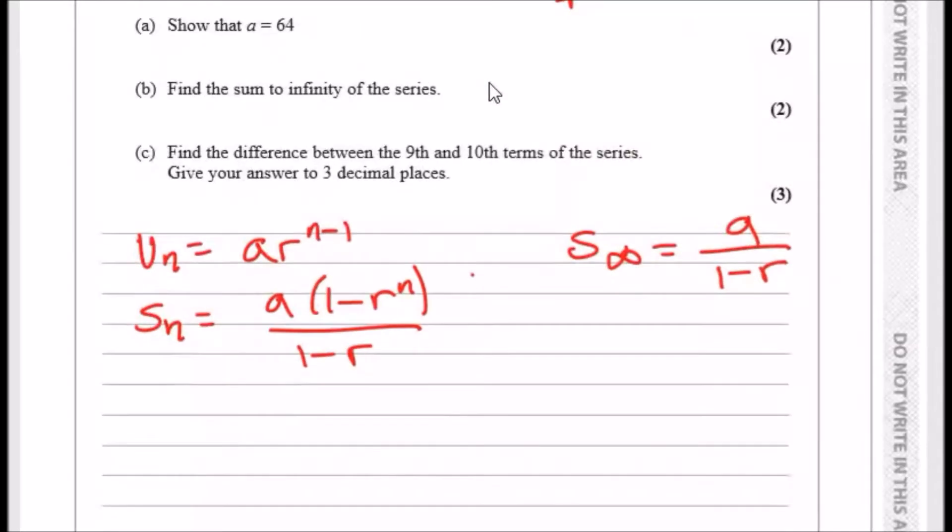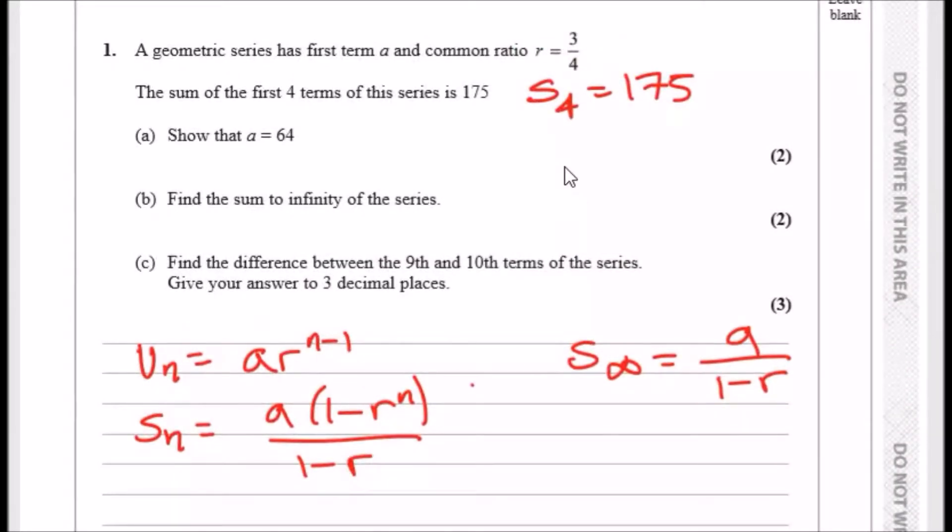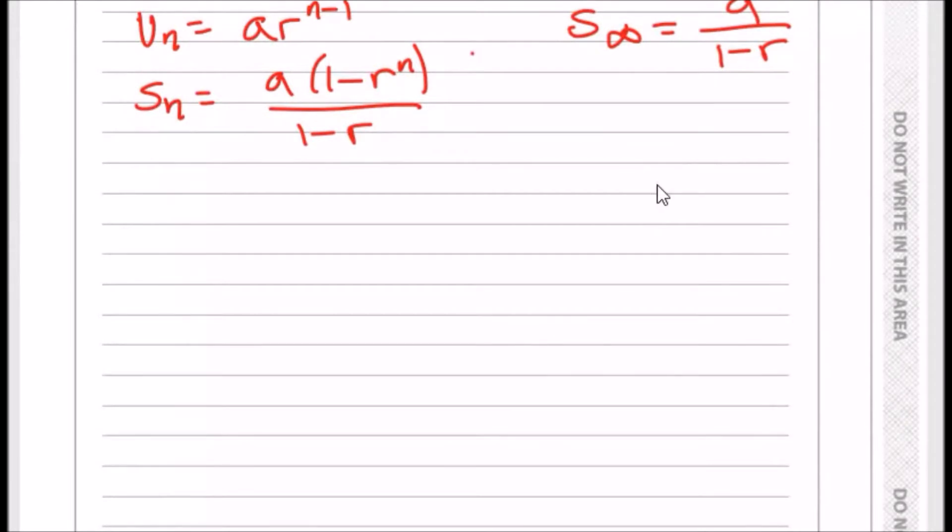Well, this is quite easy actually. All you literally do is plug in the value r here and plug in the value n, which is 4. Replace S4 with 175 and boom, solve for a. So therefore, we can say for S4, we have 175. And this is also equal to the equation up here, which is a times one minus r,